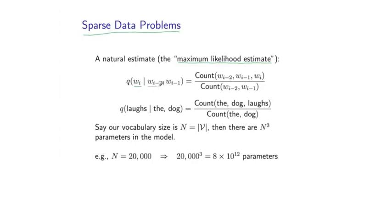conditioned on previous words wi-2 and wi-1, then we simply define this parameter estimate as the ratio of two terms. On the numerator, I have what is often called the trigram count. And this is simply the number of times I've seen the sequence of words wi-2, wi-1, wi in my training corpus.